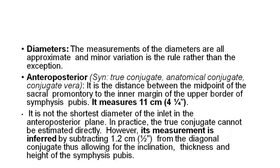Diameters of the inlet: The measurements of the diameters are all approximate, and minor variations are the rule rather than the exception. Anteroposterior diameter — the true conjugate, otherwise known as the anatomical conjugate or conjugate vera — is the distance between the midpoint of the sacral promontory to the inner margin of the upper border of the symphysis pubis. It measures 11 cm. It is not the shortest diameter in the anteroposterior plane. In practice, the true conjugate cannot be estimated directly.